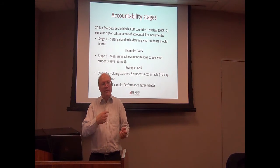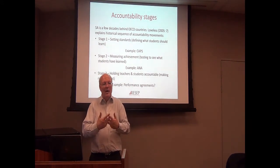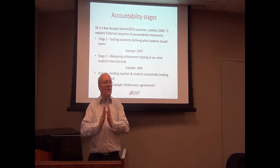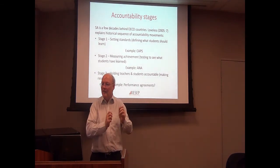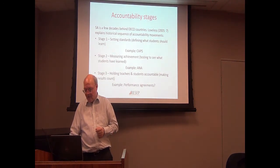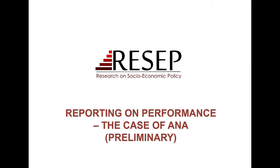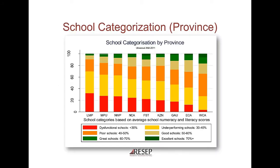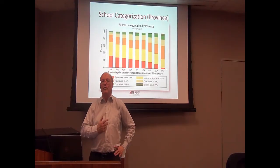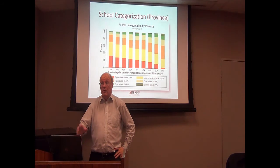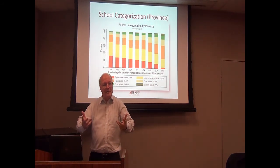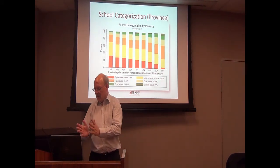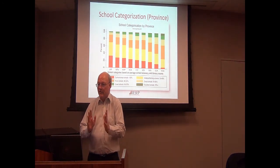To make results count, you need performance agreements or accountability structures where the school commits to performing or improving to a certain level, with some way of monitoring and incentivizing that. We can have school reports, student reports, school posters — and at the provincial level, a categorization of how schools perform. It shows that different provinces have different levels. While not all schools were covered and it's not fully representative, it gives us an idea.